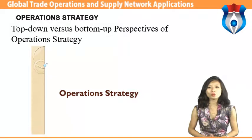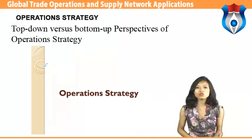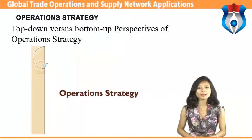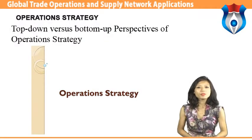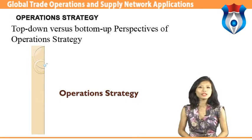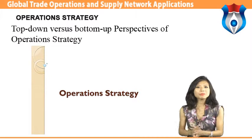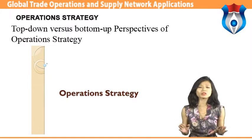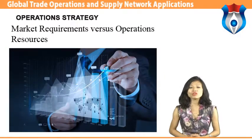Top-down versus bottom-up perspective of operation strategy: one view — the more traditional one — is that operation strategy is one of several functional strategies governed by decisions taken at the top of the organization. According to this top-down approach, overall business strategy sets the general direction of the organization, which is then interpreted by the different functional areas — marketing, finance, operations, etc. — in their functional strategies. The pure top-down view is simplistic in that it does not recognize the importance of learning through experience.